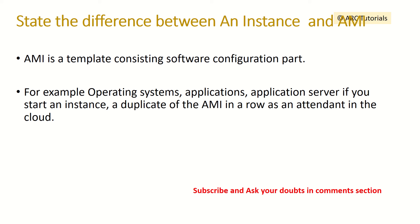What is the difference between an instance and an AMI? An AMI is a template consisting of a software configuration — for example, operating system, applications, and application server. When you launch an instance, it is a running copy of an AMI deployed in the cloud. So AMI is the configuration template, and you can have multiple instances from one AMI.